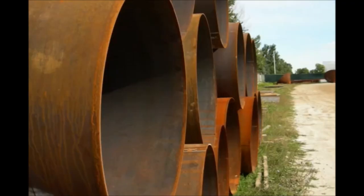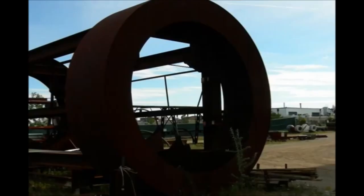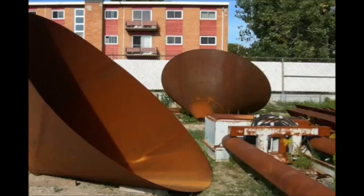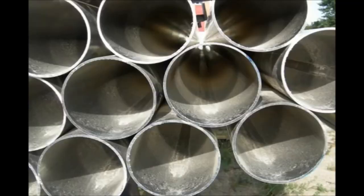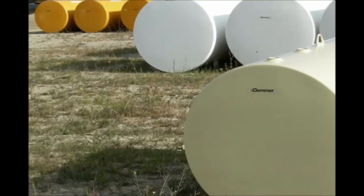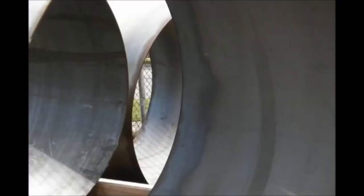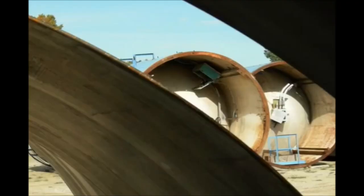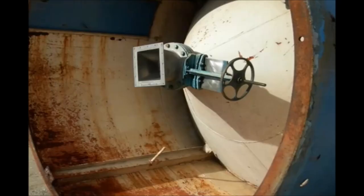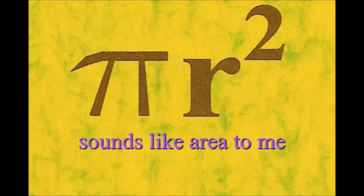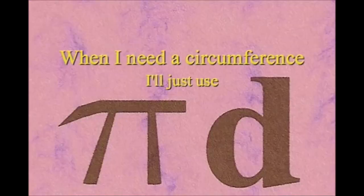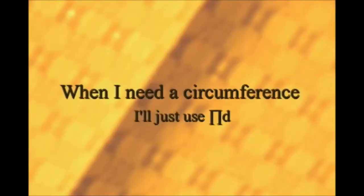Here is a circle, it knows how to get around. It has a radius from center to rim. And its diameter's a line that goes from side to side while passing through the center, now isn't that simple. Pi r squared sounds like area to me, when I need a circumference, I'll just use pi d.